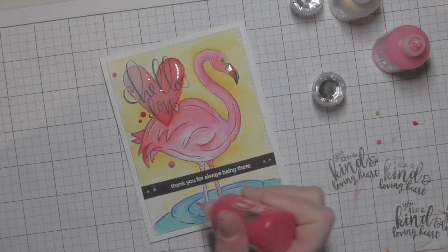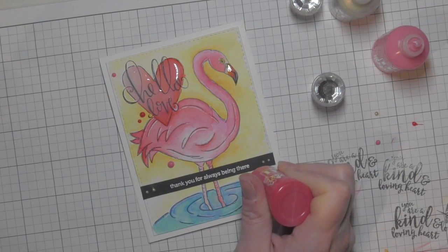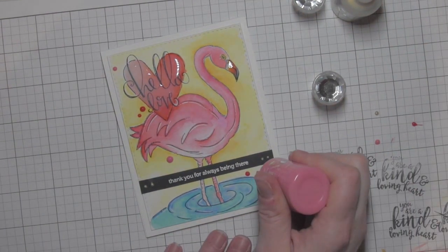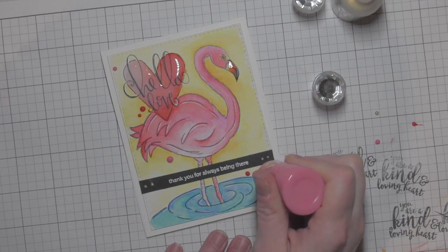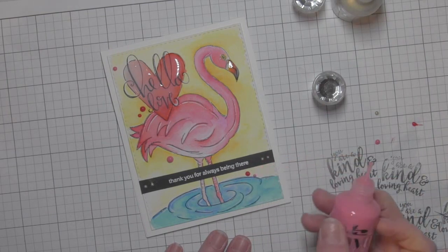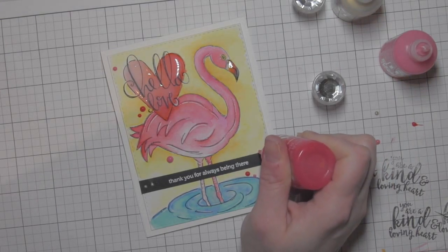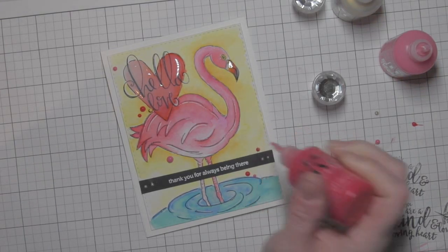I'm also going to add some red berry and carnation pink Nouveau crystal drops. Let this dry, and this is going to complete my flamingo watercolored card featuring components from the Simon Says Stamp May 2017 animation card kit.